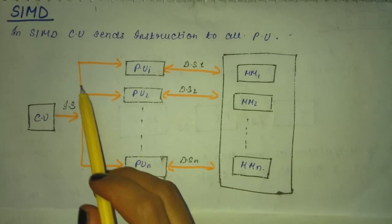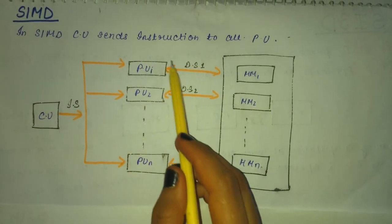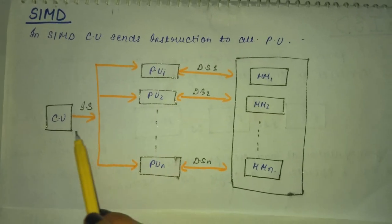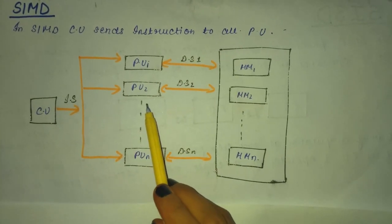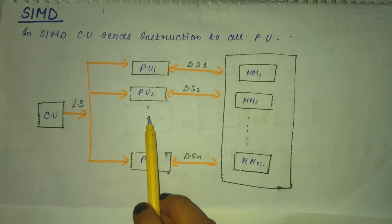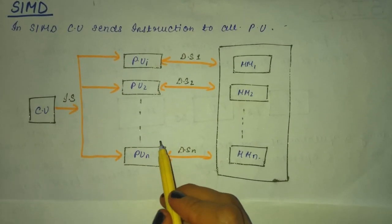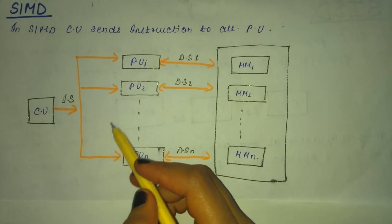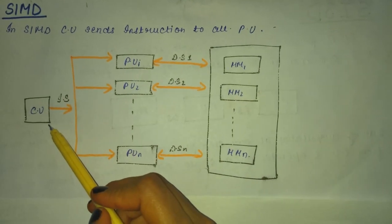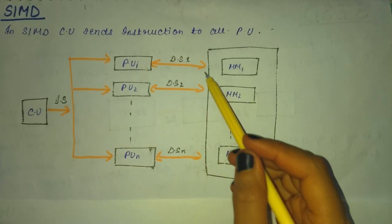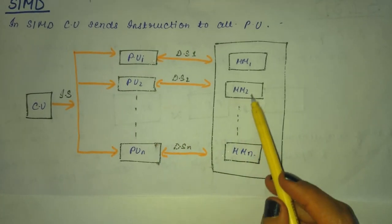Now we will see SIMD. In SIMD, CU sends instruction stream to all the PU. CU is control unit and PU is processing unit. During computation at each step, processor receives many instructions, that is different instruction sets from the CU. It contains many PU, that is processor units and many MM.